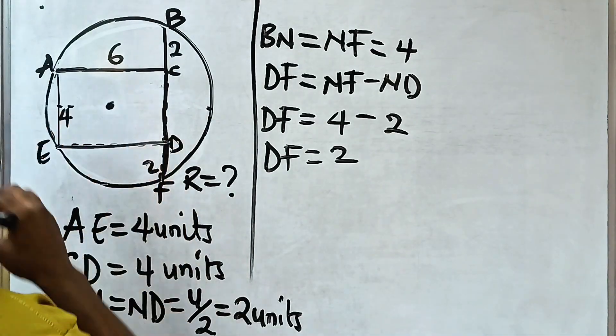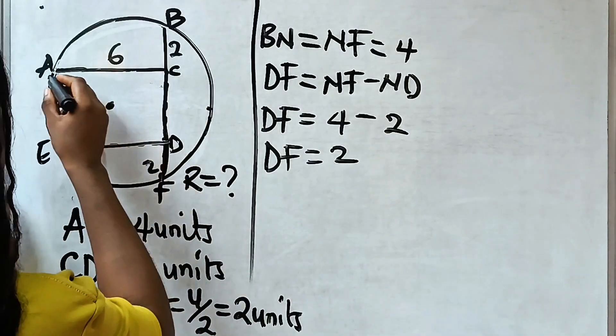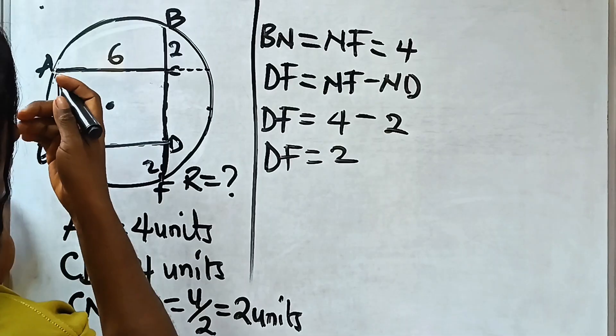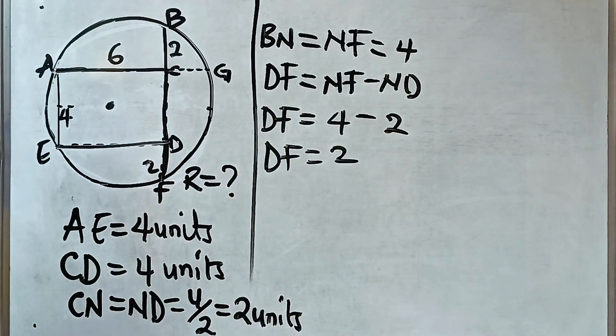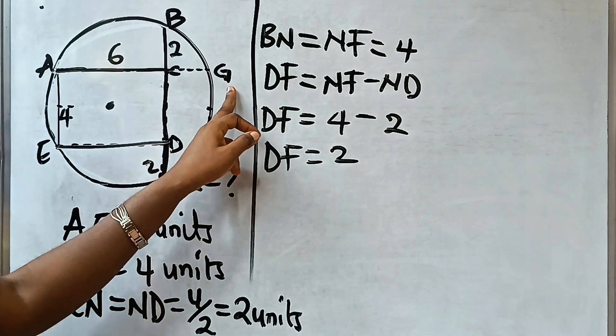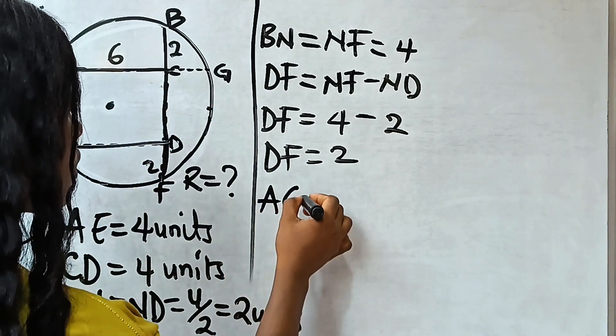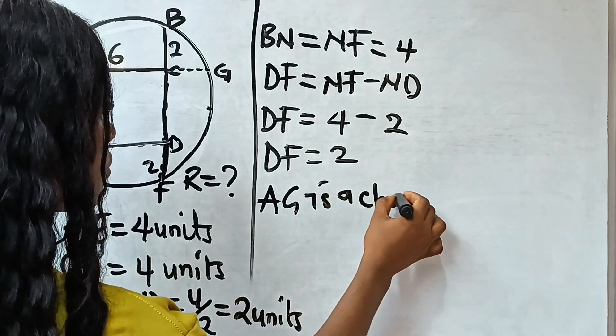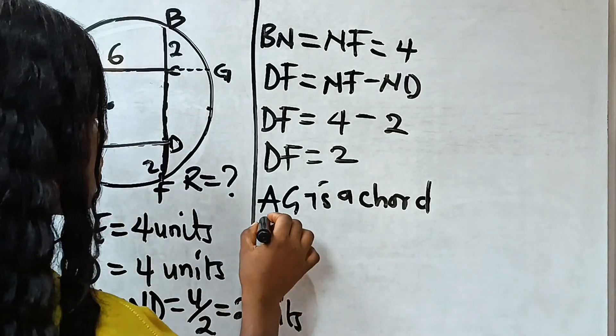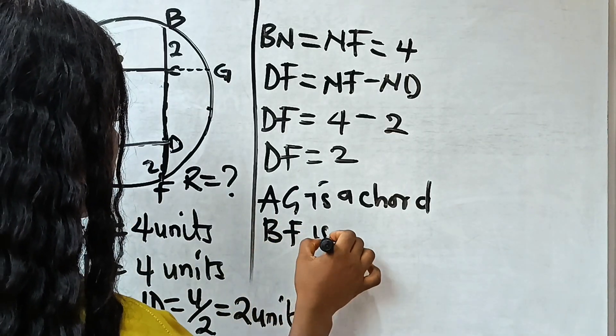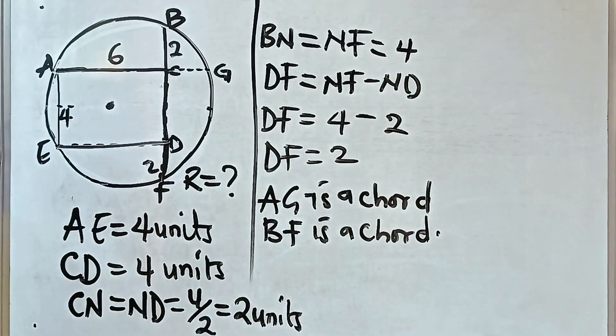Now, remember this is the center of this circle. If we should extrapolate AC to complete it, let's call this place G. Now, you notice that AG is a chord, and also BF is a chord.